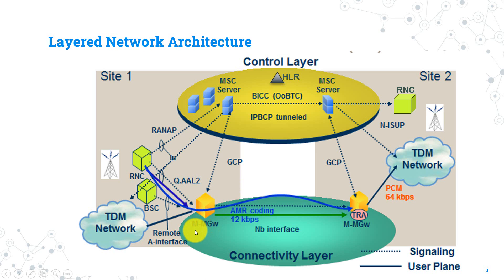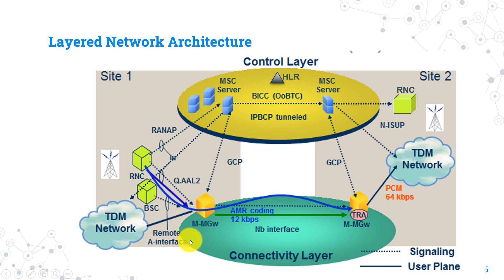The key node in the connectivity layer is the Media Gateway, or MGW. Its function is to carry user data traffic internally inside the network or externally to external networks. Finally, the key nodes in the application layer include some nodes for charging, the EIR for handset authentication, and the FNR, Flexible Number Register.